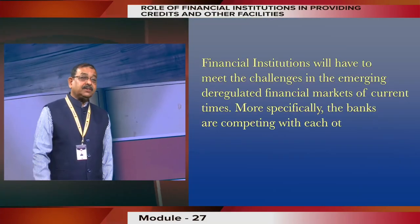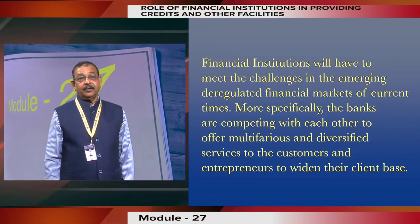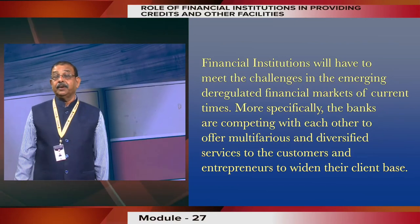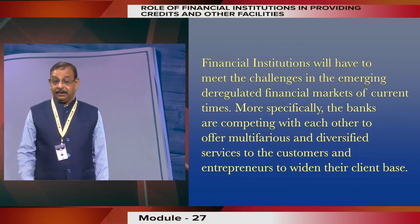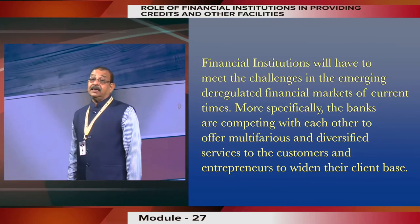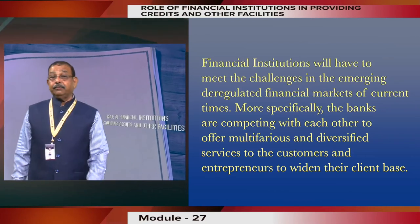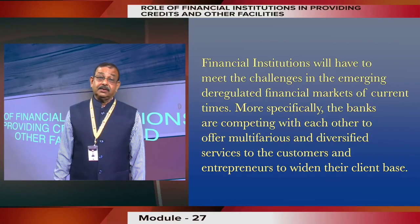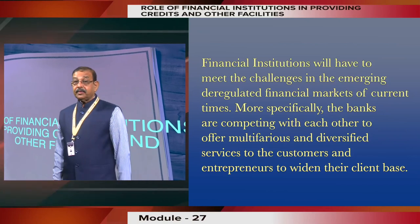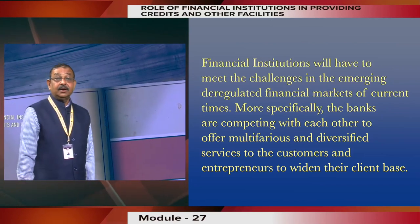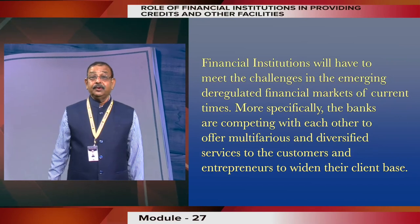In this regard, the major stakeholders could be financial institutions. These financial institutions not only facilitate individual enterprise development but also facilitate development of the entire entrepreneurship ecosystem, which can have a multiplier benefit. In conclusion, financial institutions will have to meet the challenges of the emerging VUCA environment — volatile, uncertain, complex, ambiguous — and deregulated financial markets after the 1990s. Banks are competing with each other to offer multi-period and diversified services to customers and entrepreneurs.